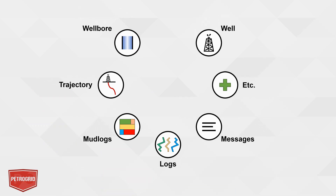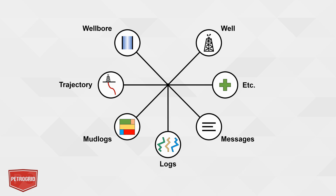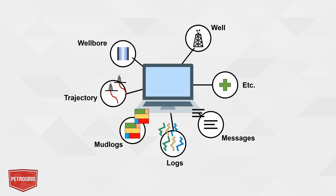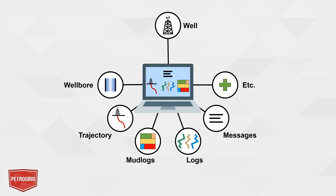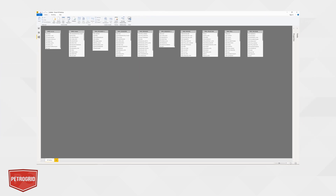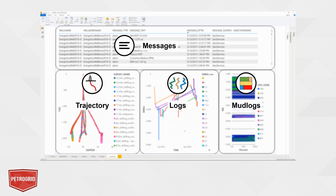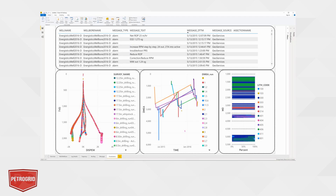To illustrate how to maintain all these data relationships, we will walk through connecting all of the PGXML generated tables together, and then visualize the data based on the common attribute of well. We will begin with an empty Power BI data model diagram, and end with a visualization page of various WitsML object types from which we can easily switch from one well to another.